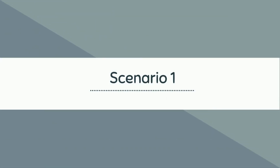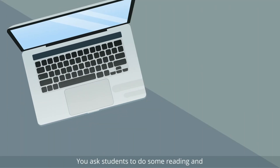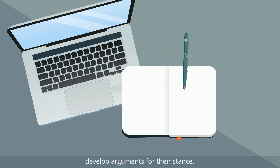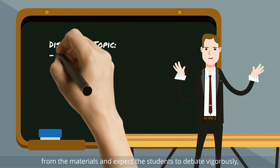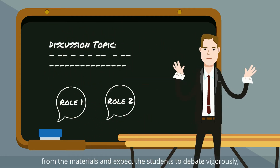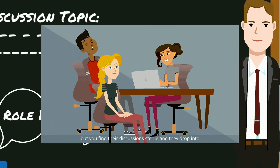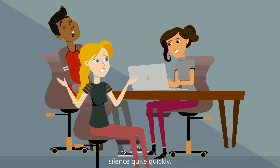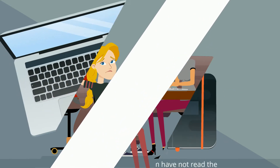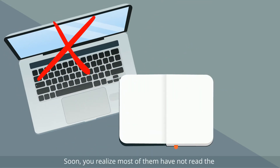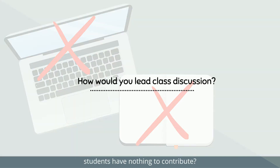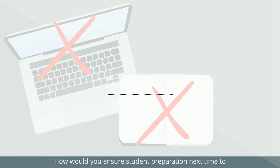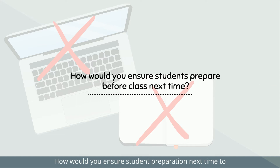Scenario 1. You ask students to do some reading and develop arguments for their stance. During class, you raise a number of controversial issues from the materials and expect the students to debate vigorously. But you find their discussions sterile and they drop into silence quite quickly. You soon realize most of them have not read the materials as required. How would you lead the discussions when students have nothing to contribute? How would you ensure student preparation next time to avoid the same uninviting learning experience?